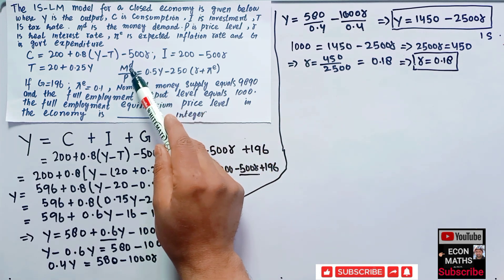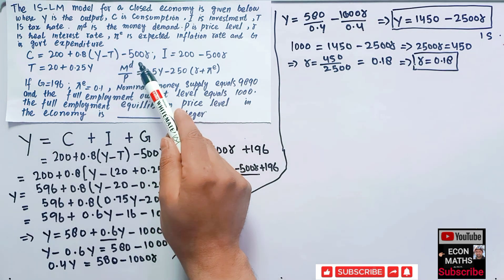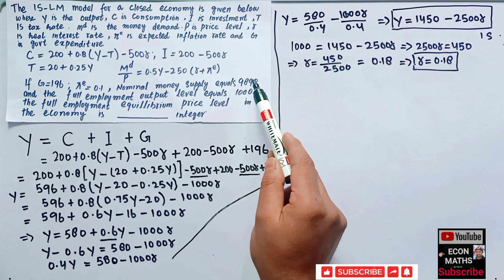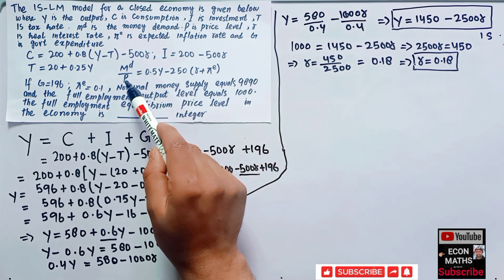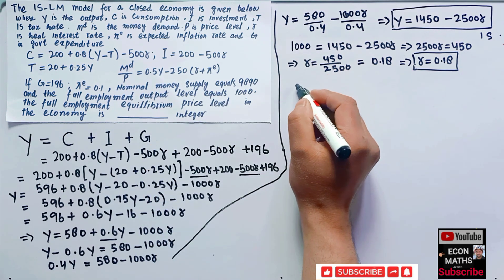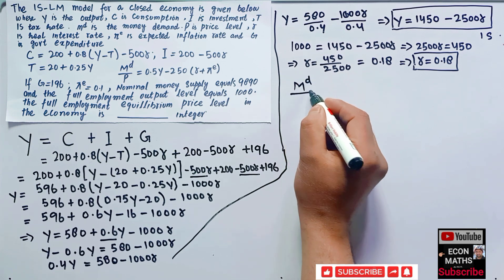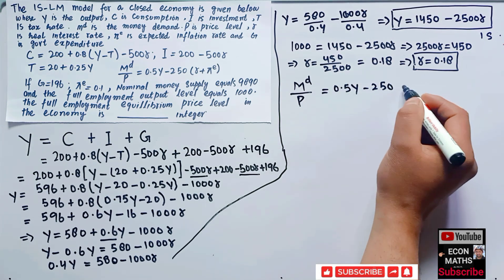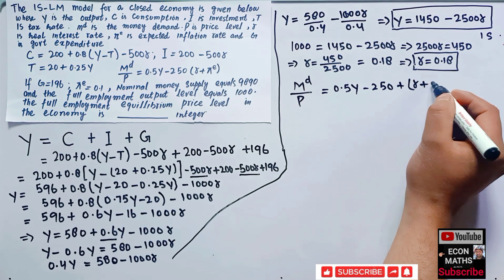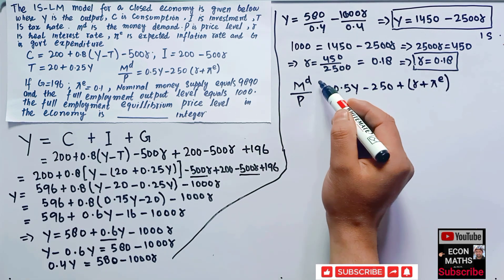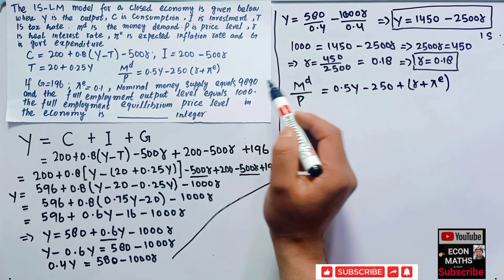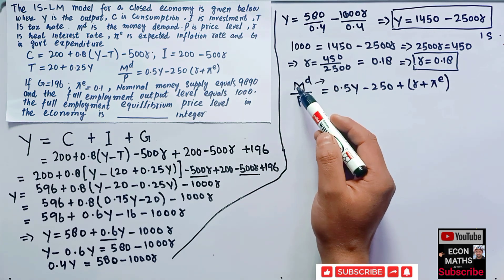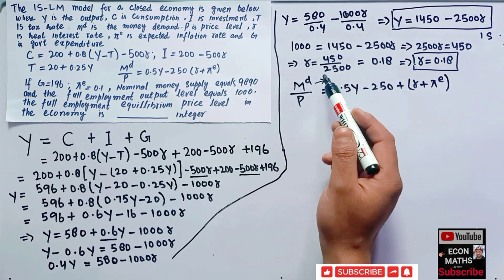Now coming to the LM equation. In the money market, money demand equals money supply. The real money demand is given as M^D / P = 0.5Y - 250(r + pi^E). The nominal money supply is given as 9890, so dividing by price level P gives real money supply.